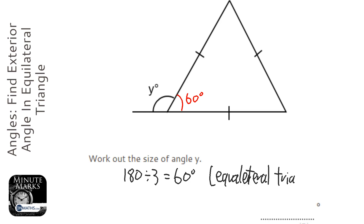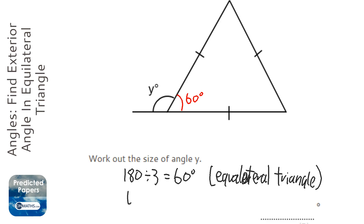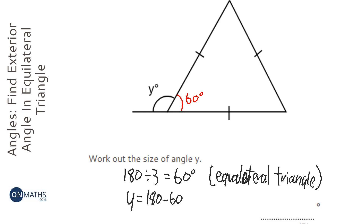That should be an A there in 'equilateral'. The next step is to work out what Y is, and to get Y we just do 180 take away 60, which equals 120 degrees.